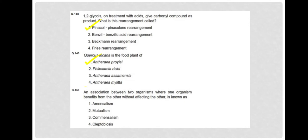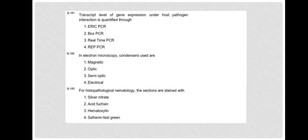Question 150: An association between two organisms where one benefits from the other without affecting the other is called commensalism. Question 151: Transcript level of gene expression under host-plant interaction is quantified through real-time PCR or RT-PCR. As it's used for quantitative analysis, it's also known as quantitative PCR or polymerase chain reaction. Question 152: In electron microscopy, condensers used are magnetic condensers.